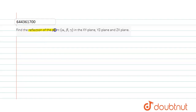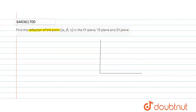Hello everyone. Today our question is: we have to find the reflection of the point alpha, beta, gamma in the XY plane, YZ plane, as well as the ZX plane. Let me explain this question using a diagram. Let me draw a 3D form — this is the Z axis, this is the Y axis, and this is the X axis — so this is the 3D XYZ space.